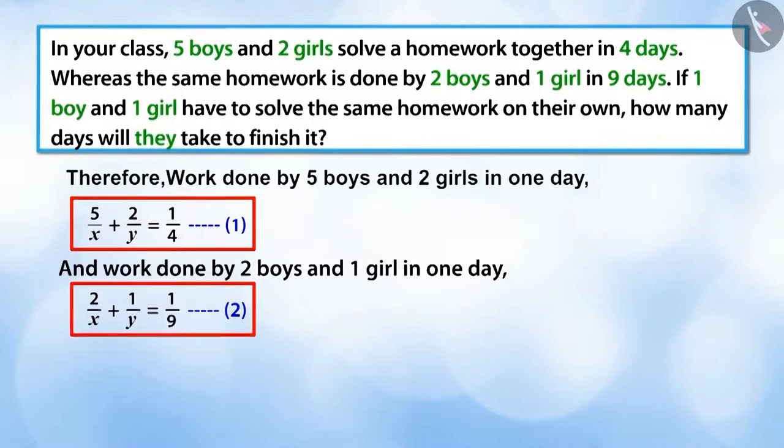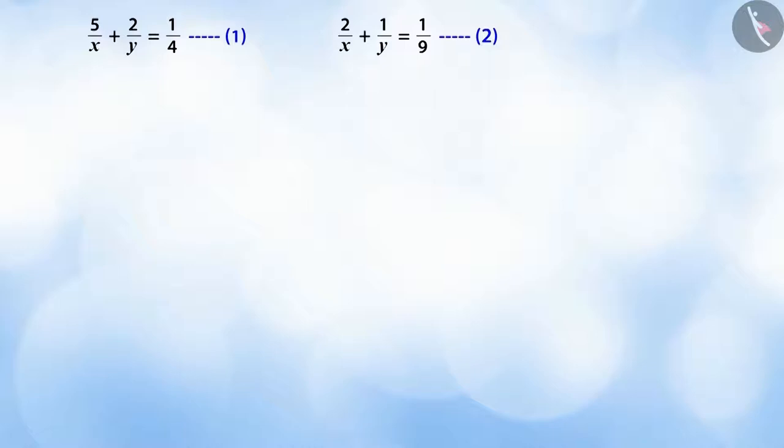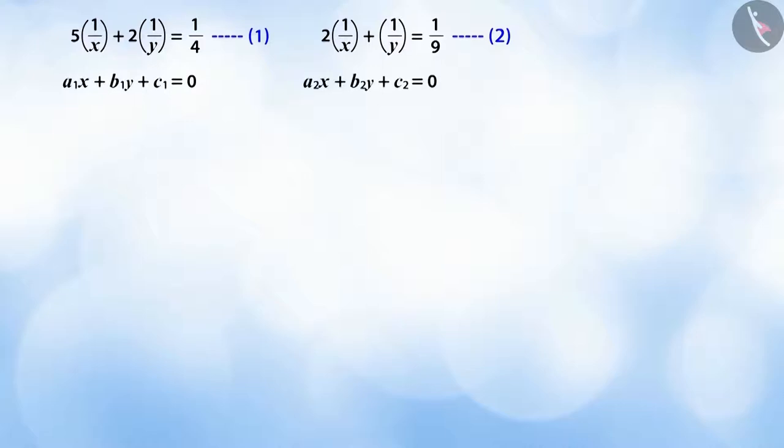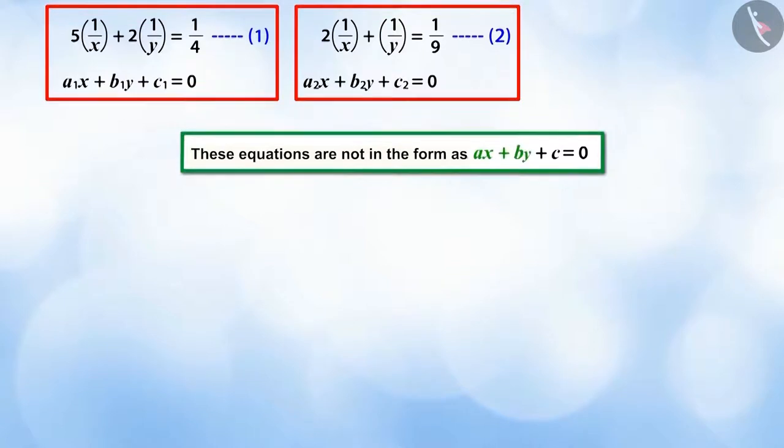Now we get equations one and two. Can you solve this pair of equations? If we write both these equations in the following manner, you can see that here we get a pair of equations, but this is not in the form of linear equations because in this the equation ax + by + c = 0 is not equal to zero, which is why it becomes difficult to solve this equation.